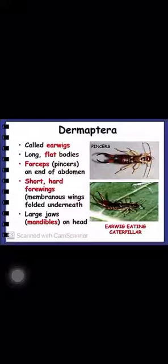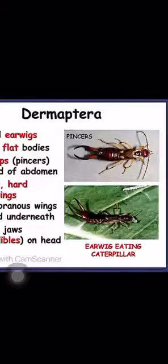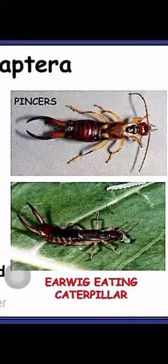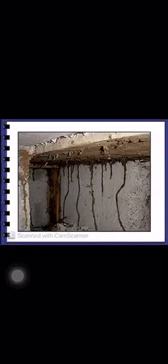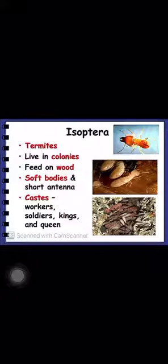Then comes Dermaptera, whose insects are called earwigs. At the posterior end there is a forceps-like structure, which is the modified genitalia. Termites belong to order Isoptera; they live in colonies and are social insects with different castes — workers, soldiers, kings, and queens.